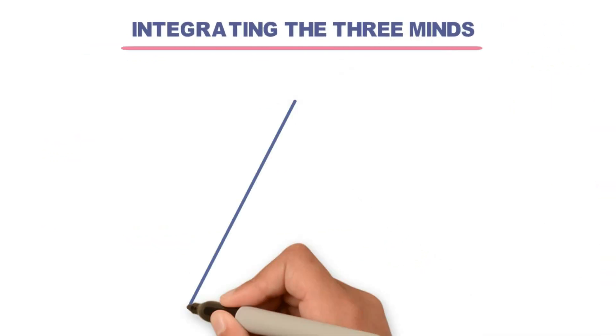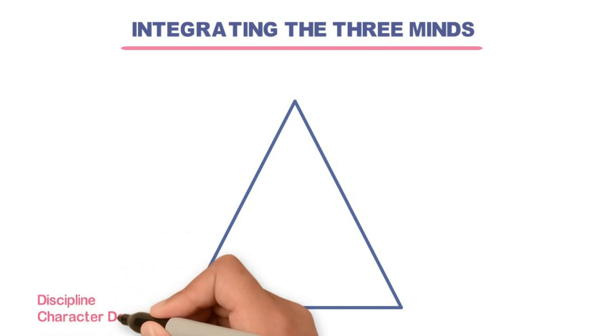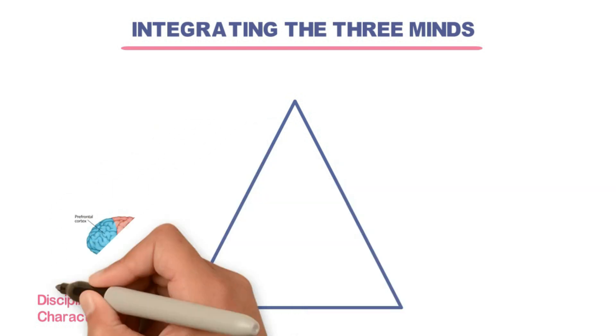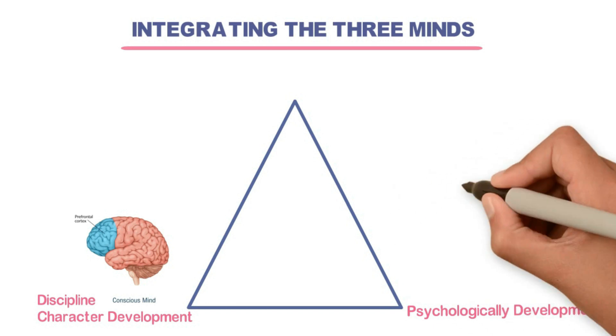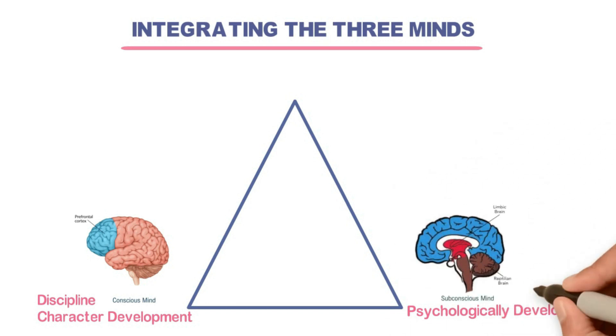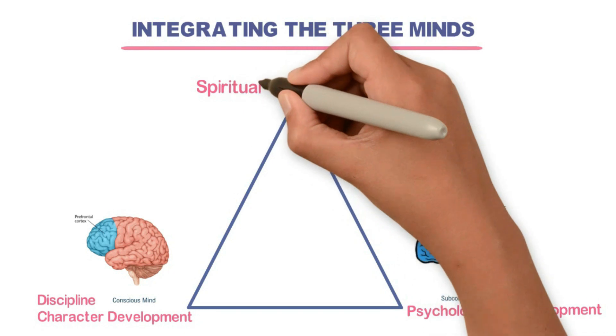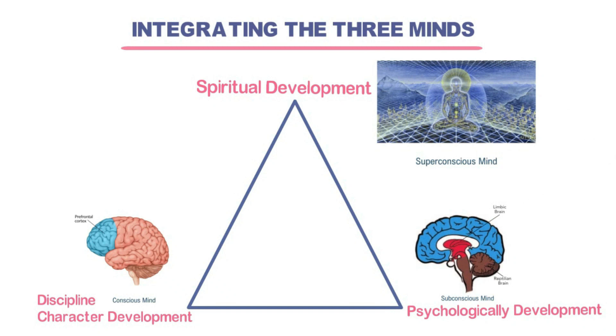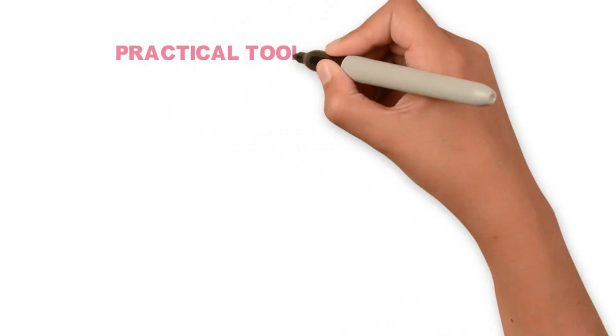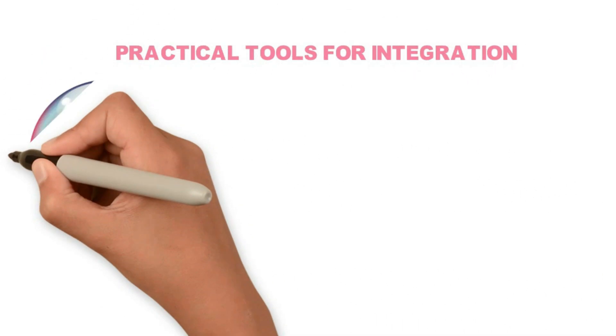At the heart of integration of these three minds is discipline and correct development. This is how we develop our conscious mind. Then there's psychological development. This is how we reprogram the subconscious mind. And spiritual development. This is how we access the superconscious mind. I've shared a lot of information in this video. So let's quickly discuss some practical steps you can take to integrate these three minds.